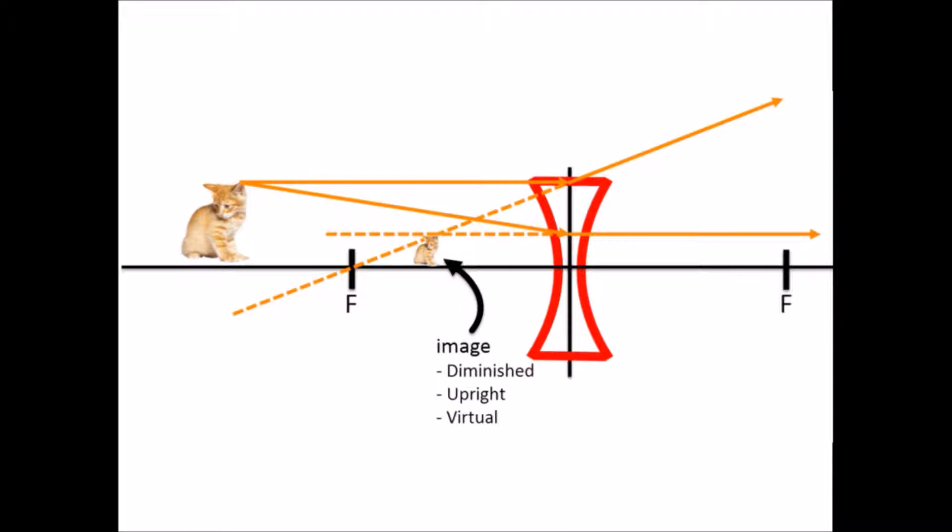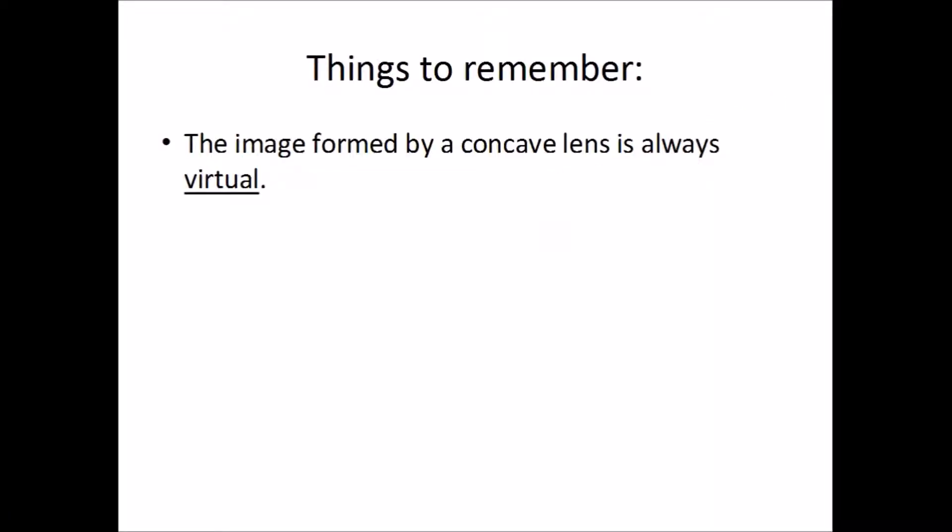Let's have a quick recap. Once more, an image in a concave lens is always virtual, no matter how far or close the object is. Concave lenses behave in a similar way to convex mirrors, except light rays are refracted through them rather than reflected off them.